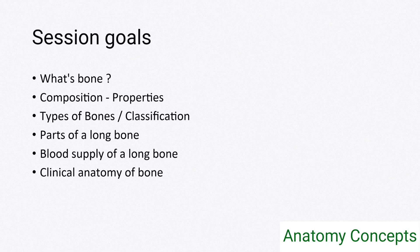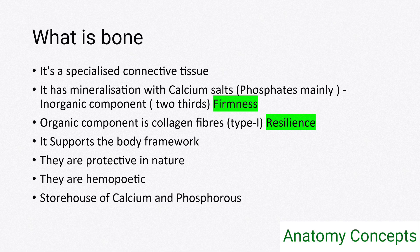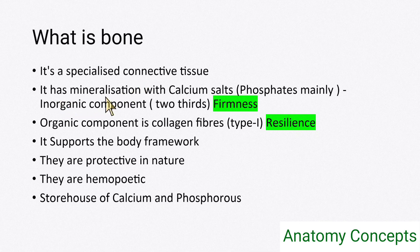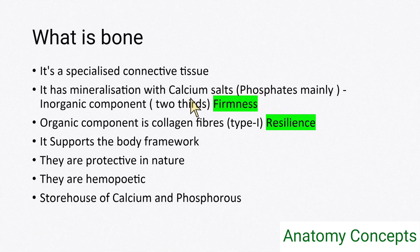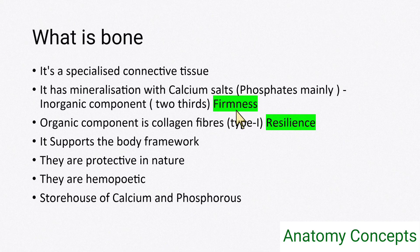Bone is a specialized connective tissue. It has connective tissue fibers — specifically collagen type 1, which is the prevalent type in bone. Along with that, it has mineralization with calcium salts. Calcium phosphate, calcium carbonates, and other salts are present. Two-thirds of the bone is the mineralized component, which imparts hardness and firmness to the bone.